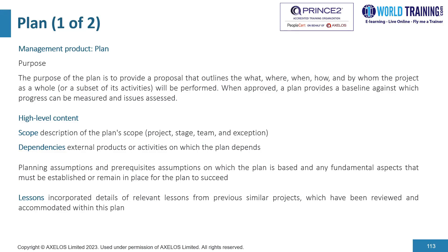The plan contains a scope section providing a description of the plan scope. It also includes dependencies — external products or activities on which the plan depends. Planning assumptions and prerequisites are another key component: assumptions on which the plan is based and any fundamental aspects that must be established or remain in place for the plan to succeed. The plan also includes lessons, incorporating details of relevant lessons from similar projects in the past which have been reviewed and accommodated.